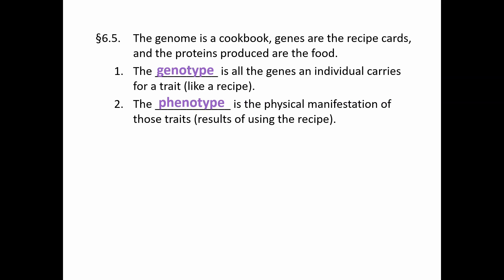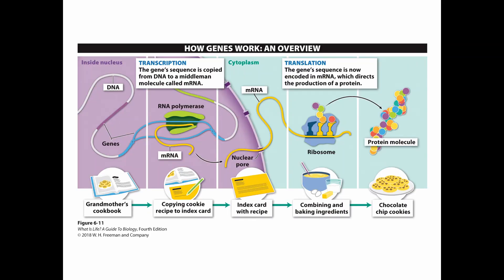How do we go from genotype to phenotype? What's the process of actually using that DNA to make the end product — a protein? This process is called the central dogma of biology: we go from DNA to RNA to protein in that order. We're inside the nucleus looking at the DNA and the genes in their entirety, which would be something like your grandma's cookbook.